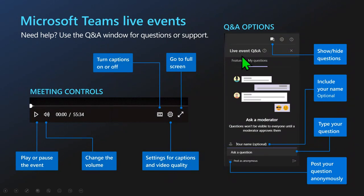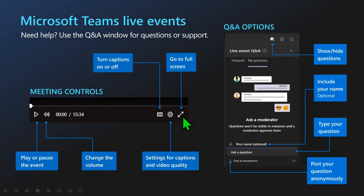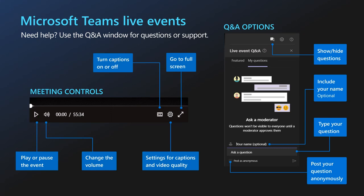For today, we are inside of a Microsoft Teams Live event. You have the ability to show and hide questions by clicking that question mark box. If you have a question, you can include your name — this is optional — type in where it says 'ask a question' and hit enter or press the paper plane icon to send. You can also post anonymously. To go full screen, hit those diagonal arrows. You can turn closed captioning on and off with the CC button — it lights up white when on. Click the cogwheel for caption and video quality settings. You can change the volume by clicking the microphone icon, and you can play and pause the event at any time, then pick right back up where you left off.